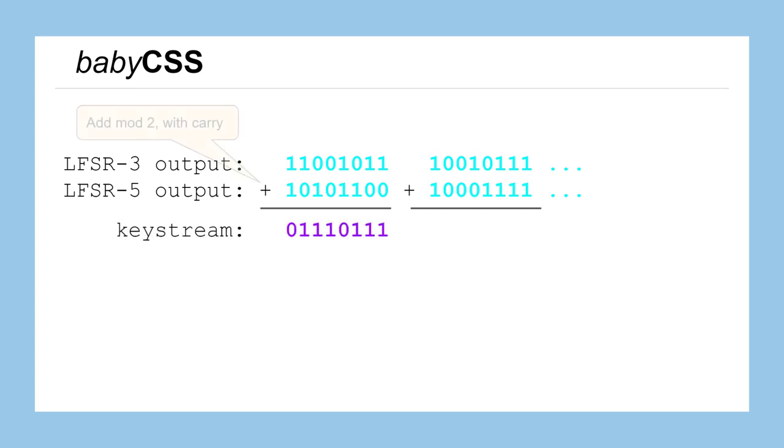And we will add those together to generate our key stream. Now remember, we add as a whole group mod 2 with carrying. So the first output of the key stream would be a one, and then a one, and then a one, and then a zero because one plus one is two, which is represented by one zero. So the zero goes down in the key stream and then we carry the one up and we follow that through the rest of the way.